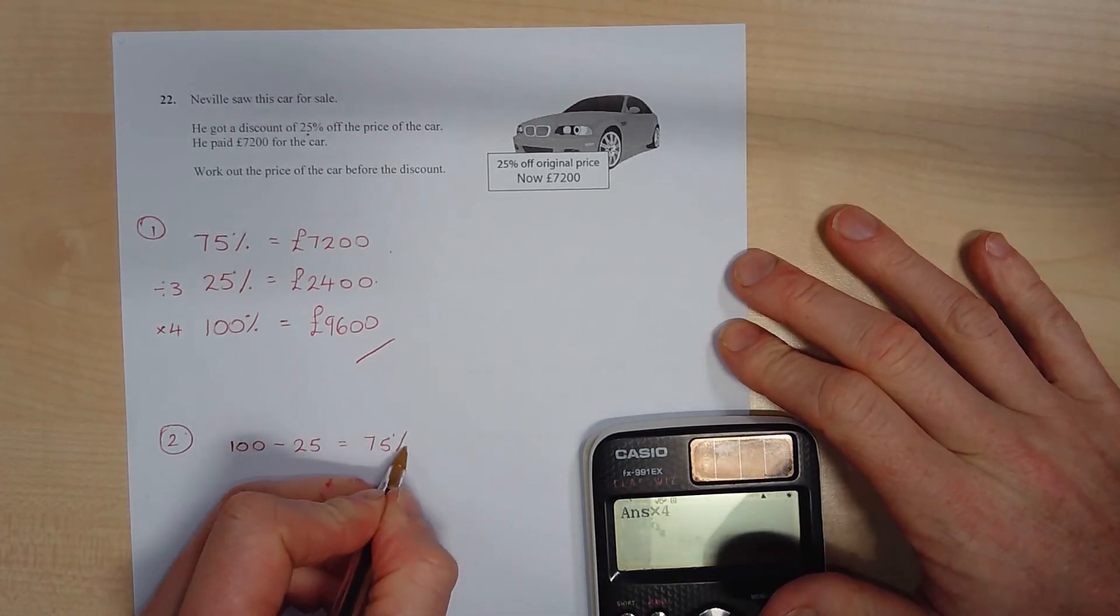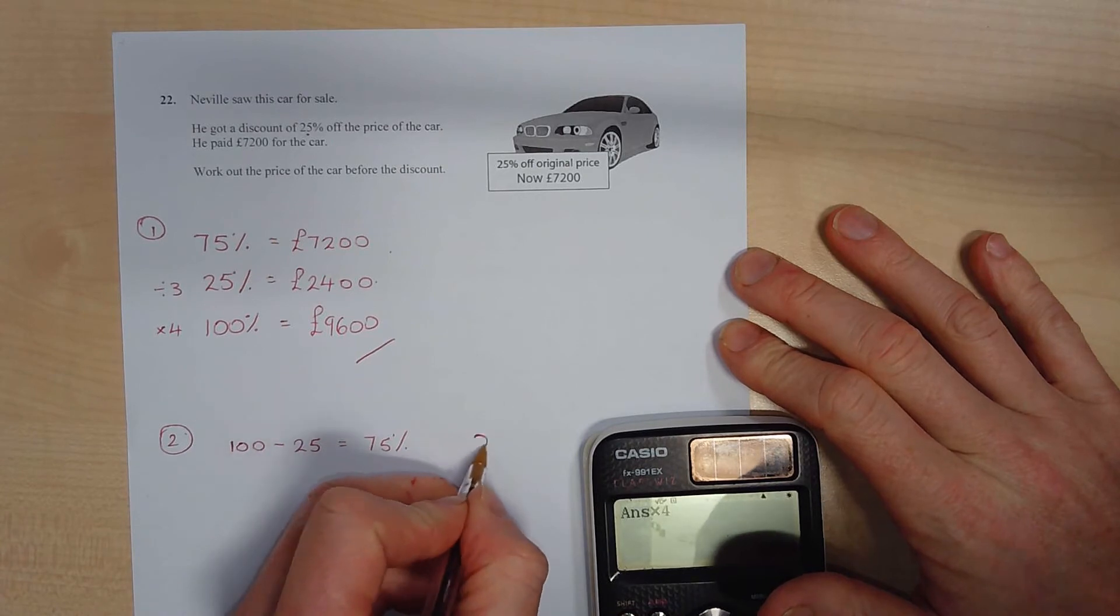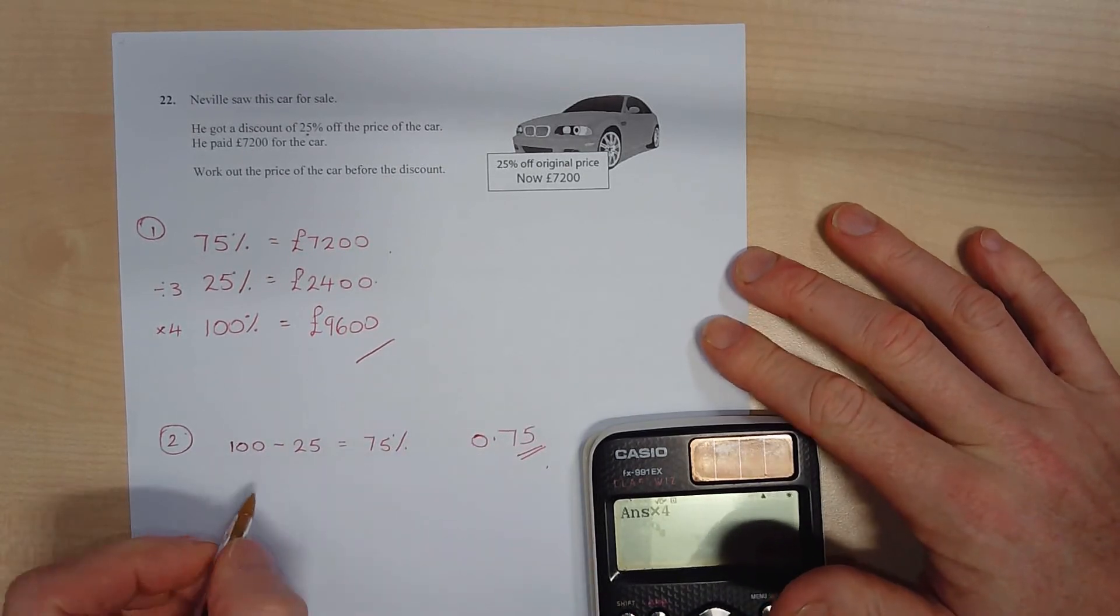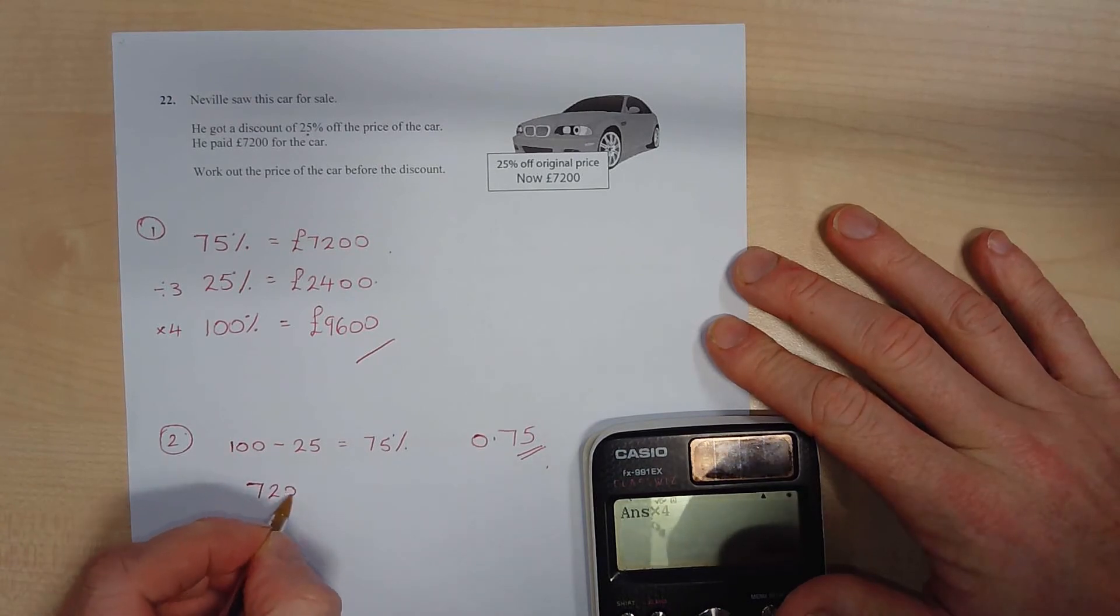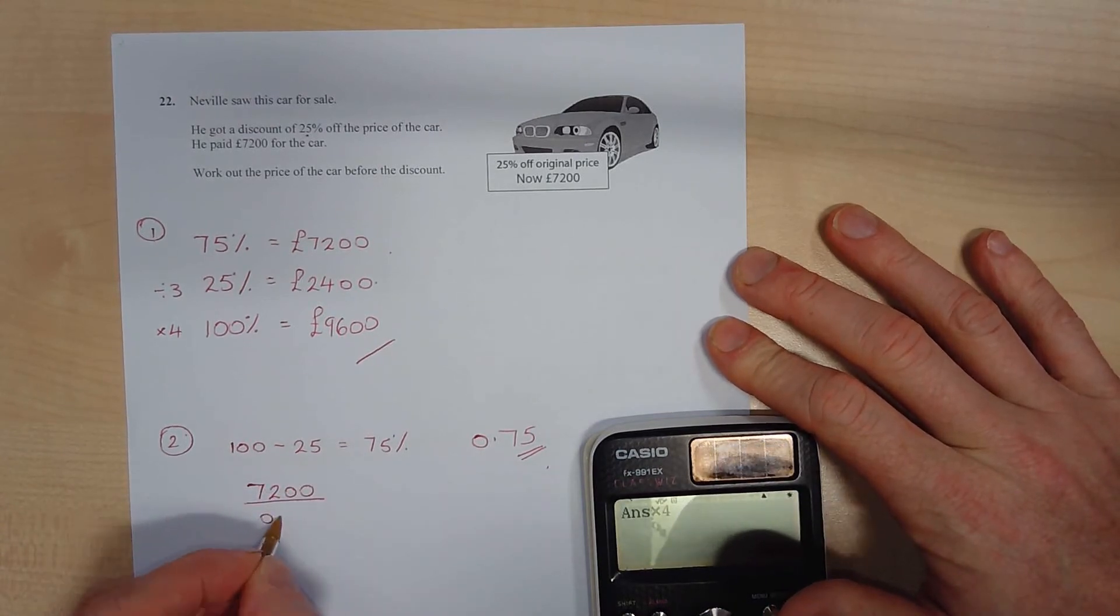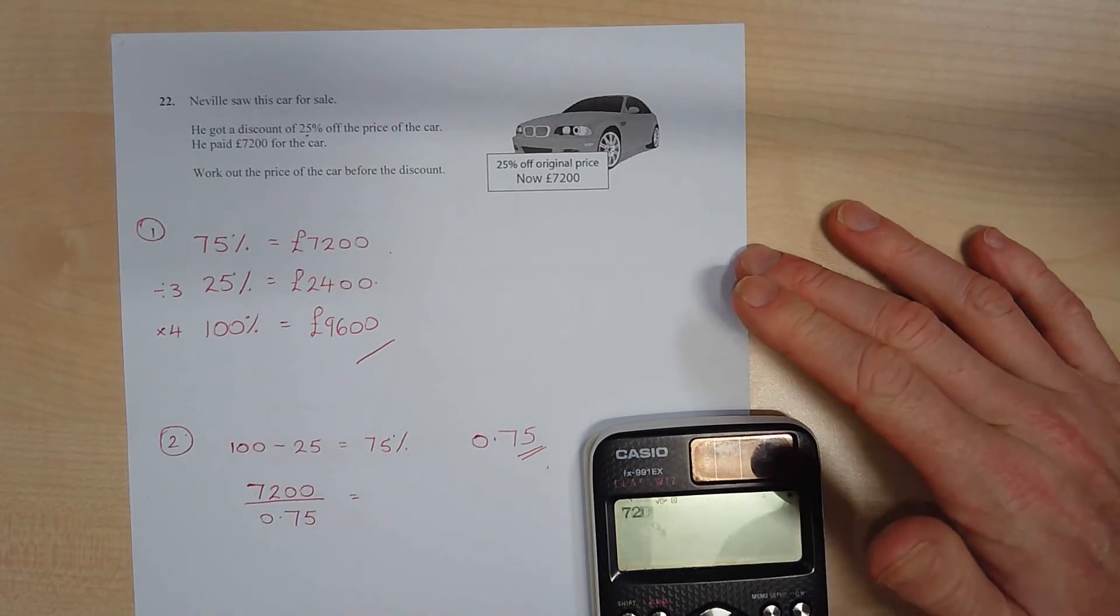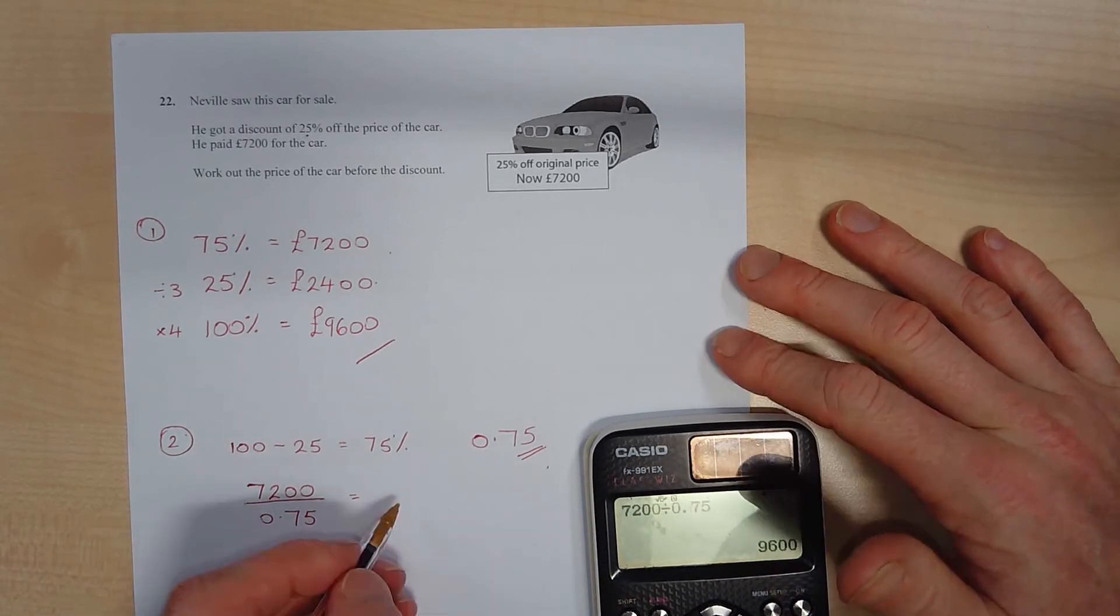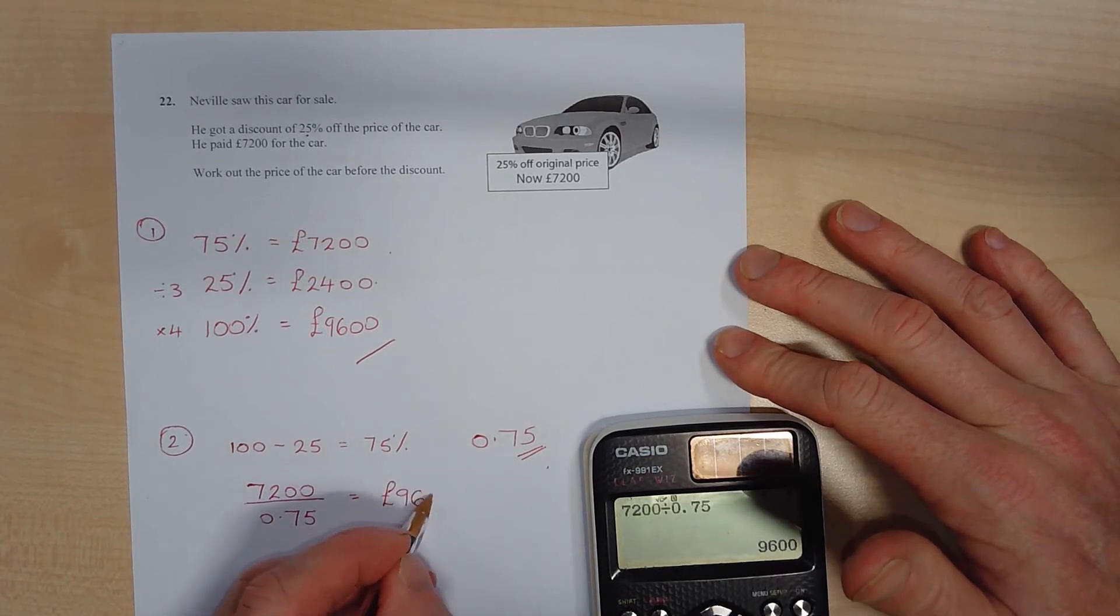The other way is you can think of the multiplier for a 25% decrease. So if we think about 100 take away 25 is the 75, but we want the multiplier, we want that as 0.75.